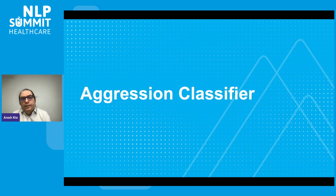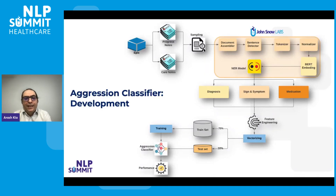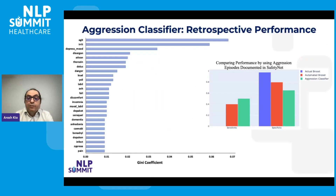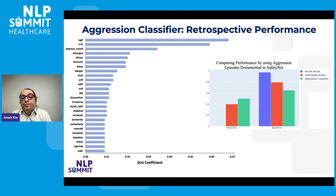The second step was building a classifier. Using the same JSL modules, pre-trained models, and embedding models, we extract diagnosis, signs, symptoms, and medications to build the aggression classifier. We took all documented episodes in the safety reporting system and compared the performance of the clinician-led process against the automated process and the aggression classifier.